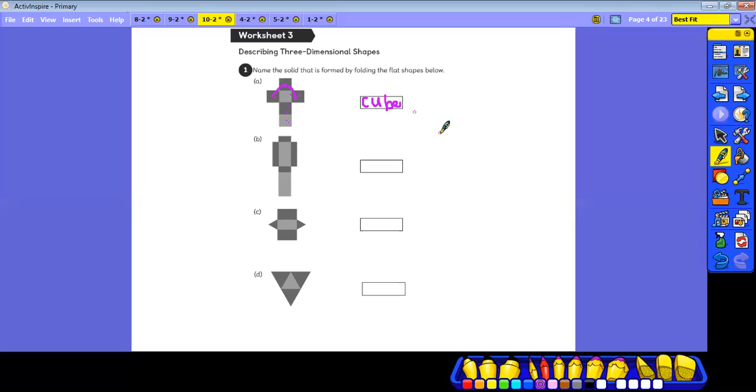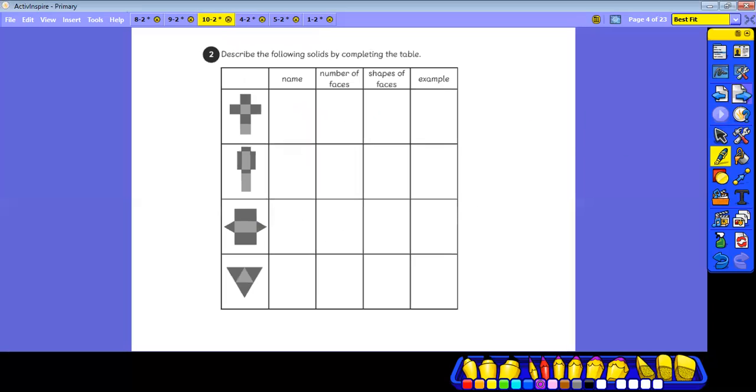I'm sure your writing will be neater than mine. And you need to name this shape, this shape, and this shape. What solid shape could you form from those flat 3D shape nets? And then you've got some more to name. Give me the number of faces, the shapes of the faces. And when it says example, it means a real life example. Something that would be that shape in real life.